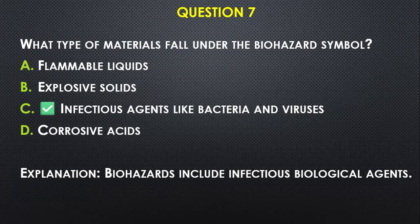Question number seven: What type of materials fall under the biohazard symbol? A) flammable liquids, B) explosive solids, C) infectious diseases like bacteria and viruses, D) corrosive acids. I would go with C, because biohazard refers to infectious biological risks.